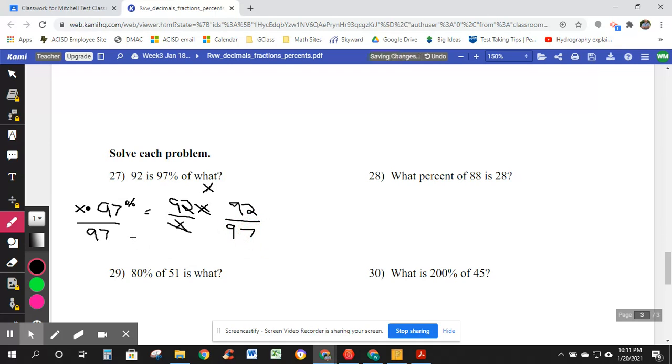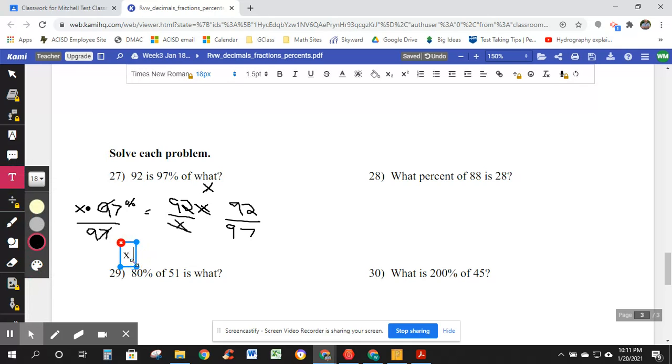This time the 97's cancel. So let's make it back in print in case that's confusing. X is equal to 92 divided by 97. And that's 94.8. What it tells you in the calculator is 0.948, 94.8%, excuse me, the number. Whew. 92 is 97% of what number? 94.8. That's the number.